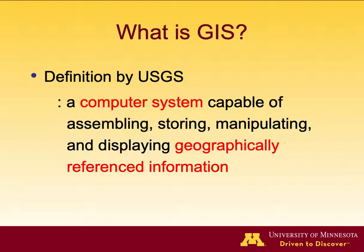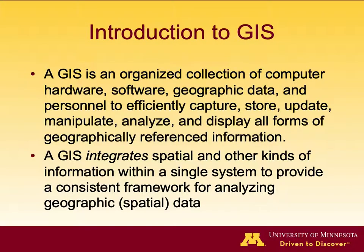The definition from USGS about GIS is: a computer system capable of assembling, storing, manipulating, and displaying geographically referenced information. More fundamentally, a GIS is an organized collection of computer hardware, software, geographic data, and personnel to efficiently capture, store, update, manipulate, analyze, and display all forms of geographically referenced information.